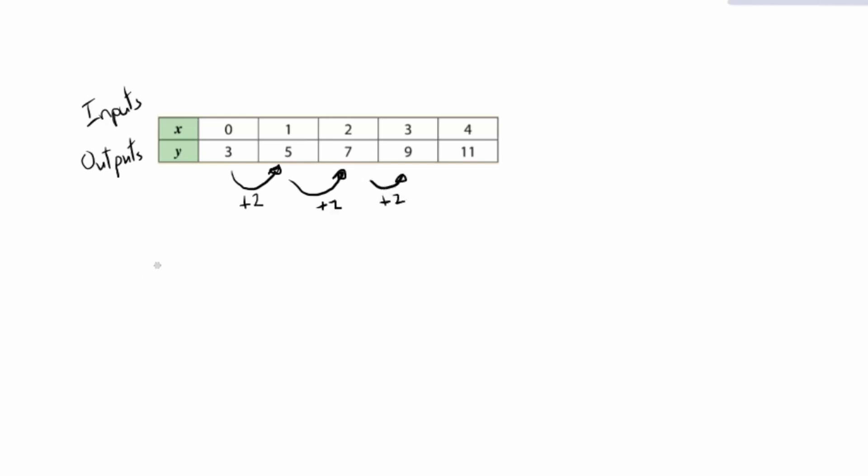We can start with the same method and say, well, the general term will be—instead of the output previously was called our nth term, but this time our output is called y. So now y will be equal to the constant difference, which is 2 in this case, multiplied by the input, by the position. The input, the position in this case is x if we want to make it generalized. But we need to remind ourselves that we need to add or subtract something before we can say that this is finished.